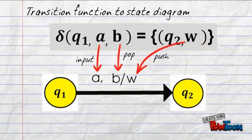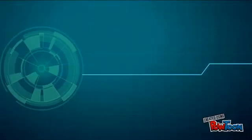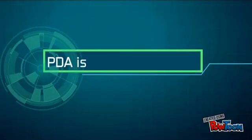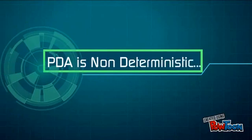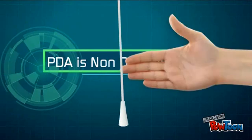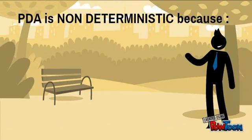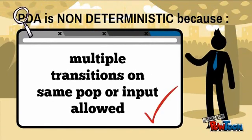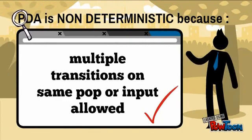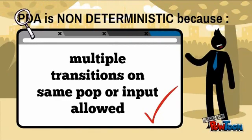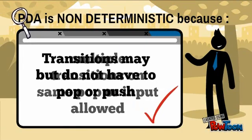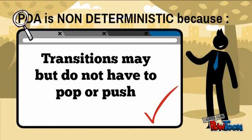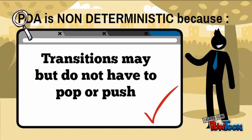W will be as a push. PDA is non-deterministic. PDA is non-deterministic because multiple transitions on the same input are allowed. Transitions may but do not have to pop or push.